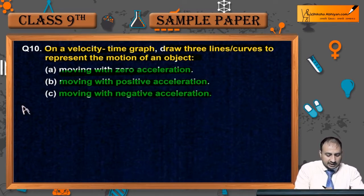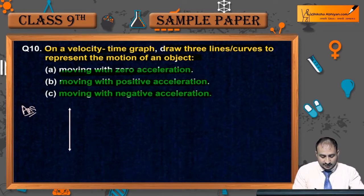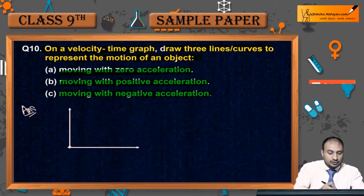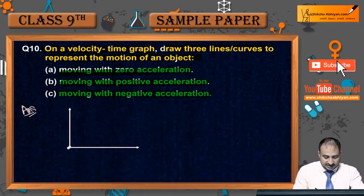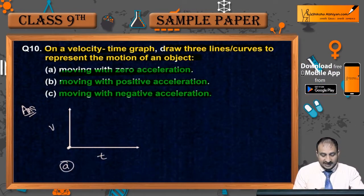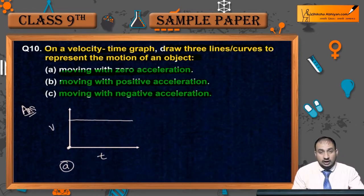इस case में सबसे पहले graph बनाते हैं। यह velocity हो गई, यह time हो गया। First case के लिए जब zero acceleration है, तो इसका मतलब object constant velocity से move होगी, तो इस case में graph एक horizontal straight line की तरह बनेगा।